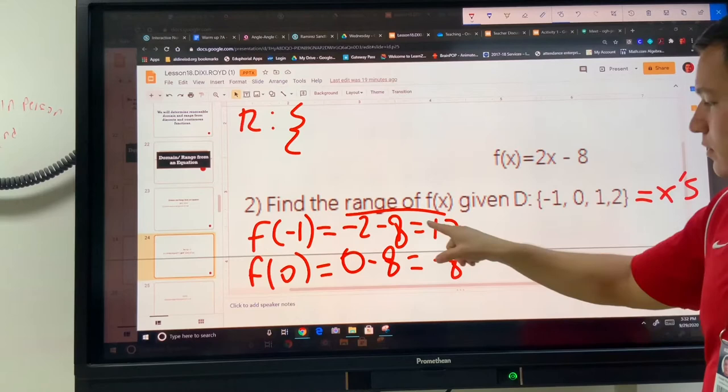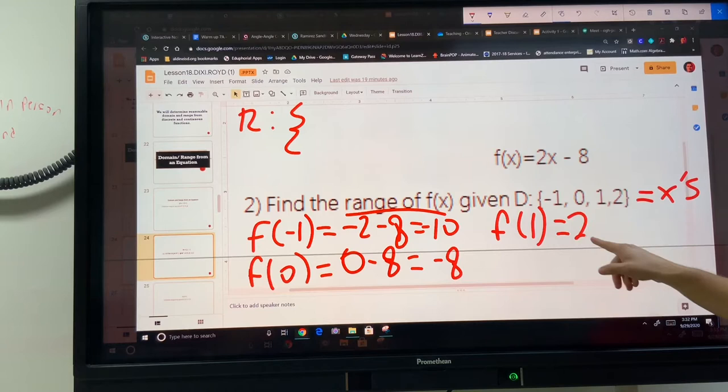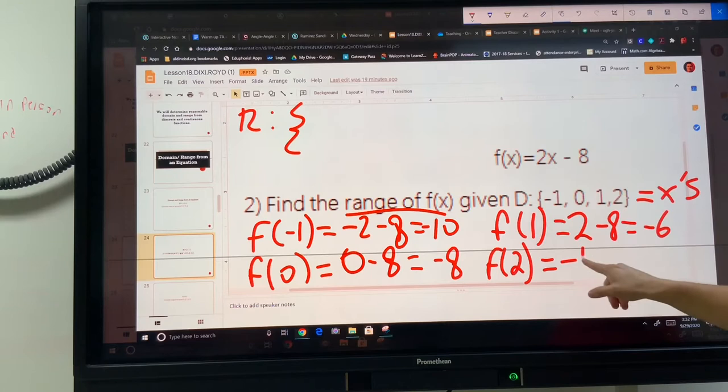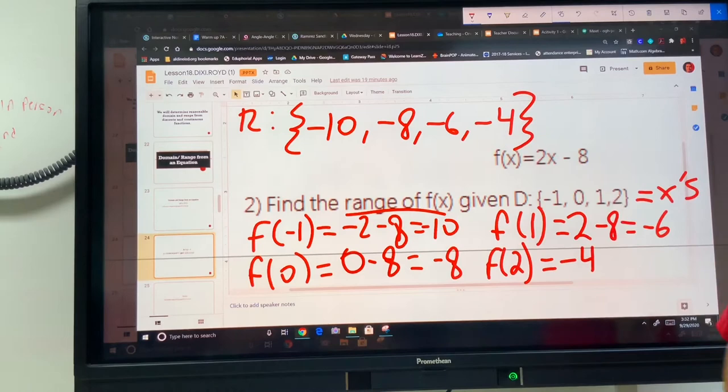This one's negative 10. f of 1 will be 2 times 1, which is 2, minus 8, which is negative 6. Finally, f of 2 is going to make 4 minus 8, which is negative 4. We're going to throw all these together into the range: negative 10, negative 8, negative 6, negative 4. Done.